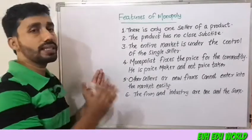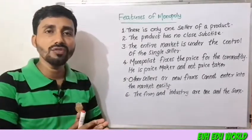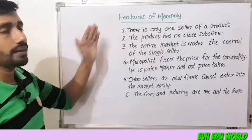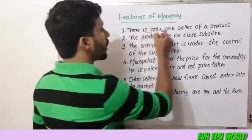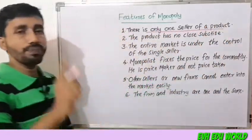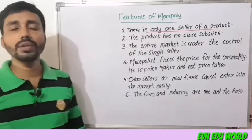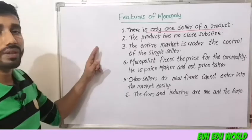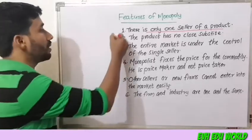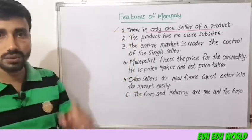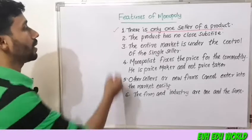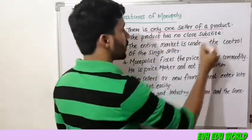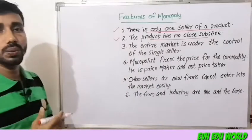Now we are discussing the features of monopoly. First, there is only one seller of a product. Second, the product has no close substitute — it is the only product in the market.